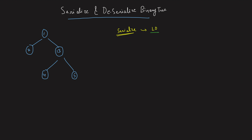Since we're following level order traversal to serialize, it's very simple. The first node you traverse is 1 — append 1 comma. Next node is 2 — append 2 comma. Next is 13 — append 13 comma. Now, 2 should ideally have had a left child, but there is no left child of 2, so this will be null. Whenever there is a null, you can use a hash or any character apart from a number.